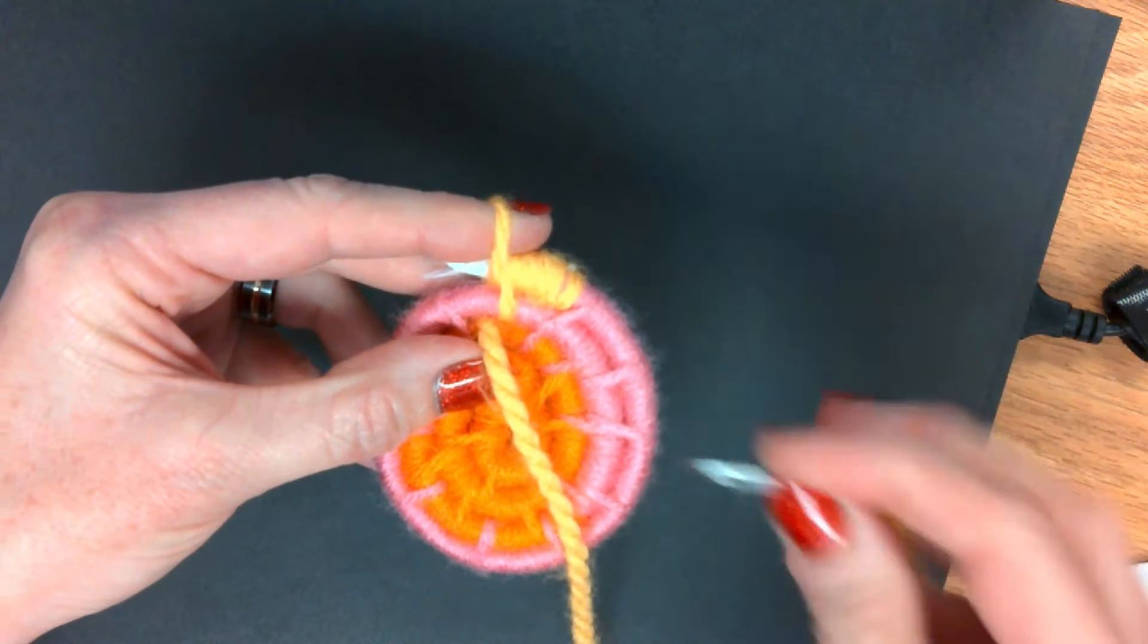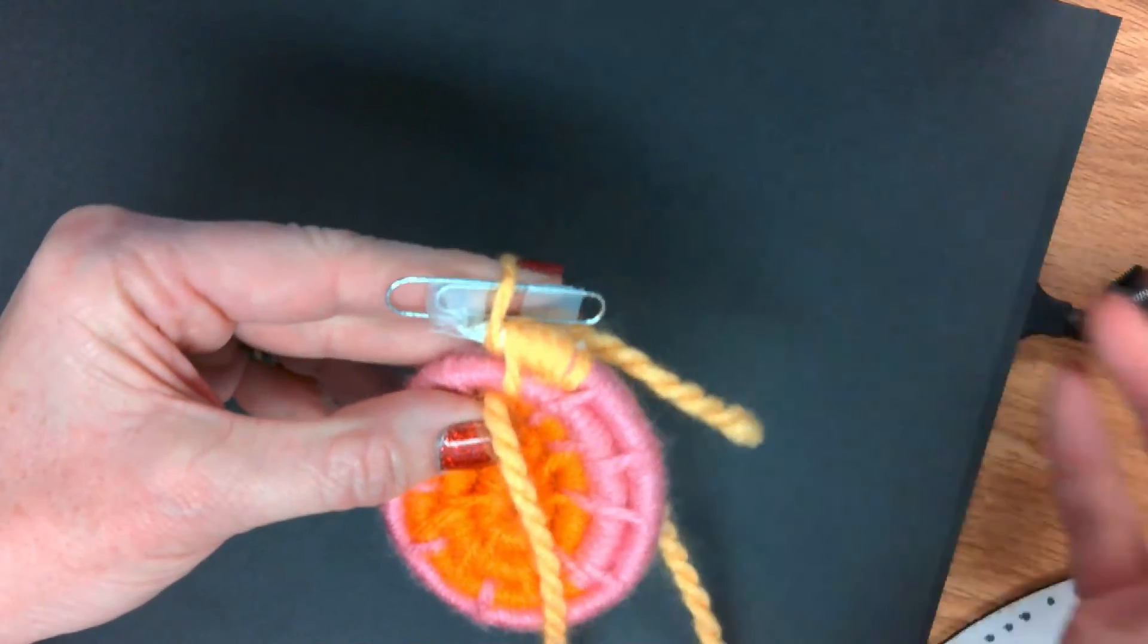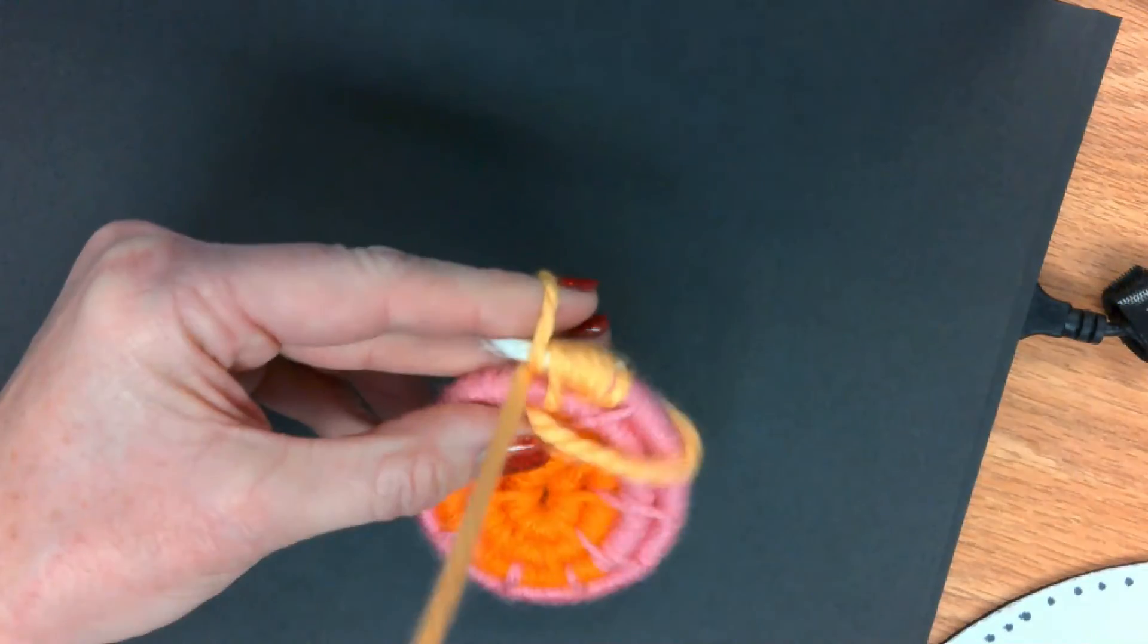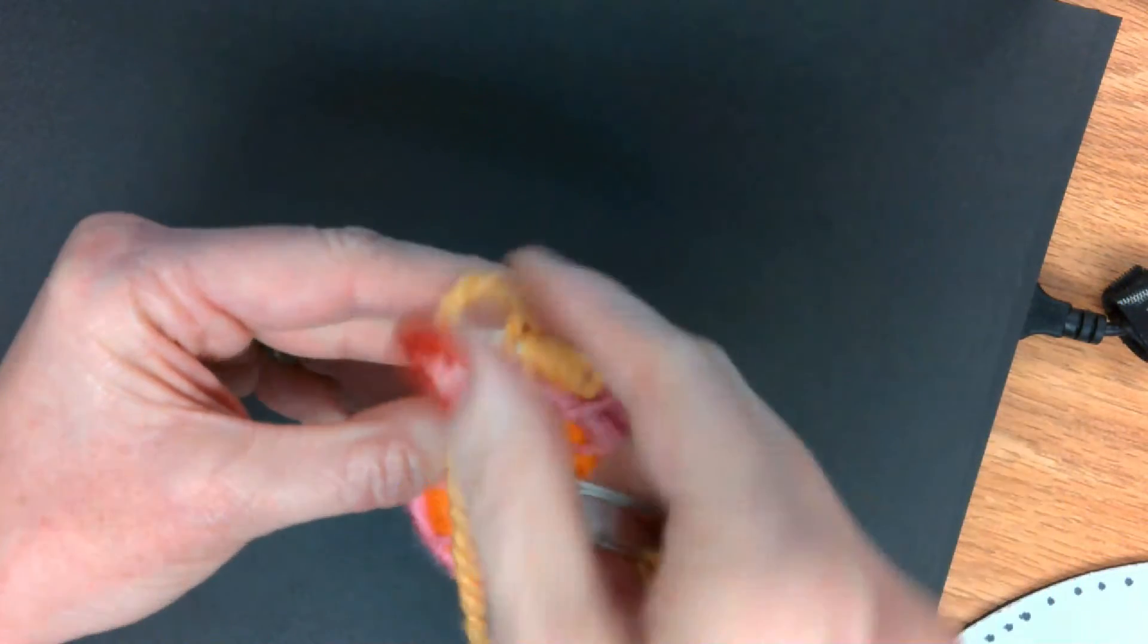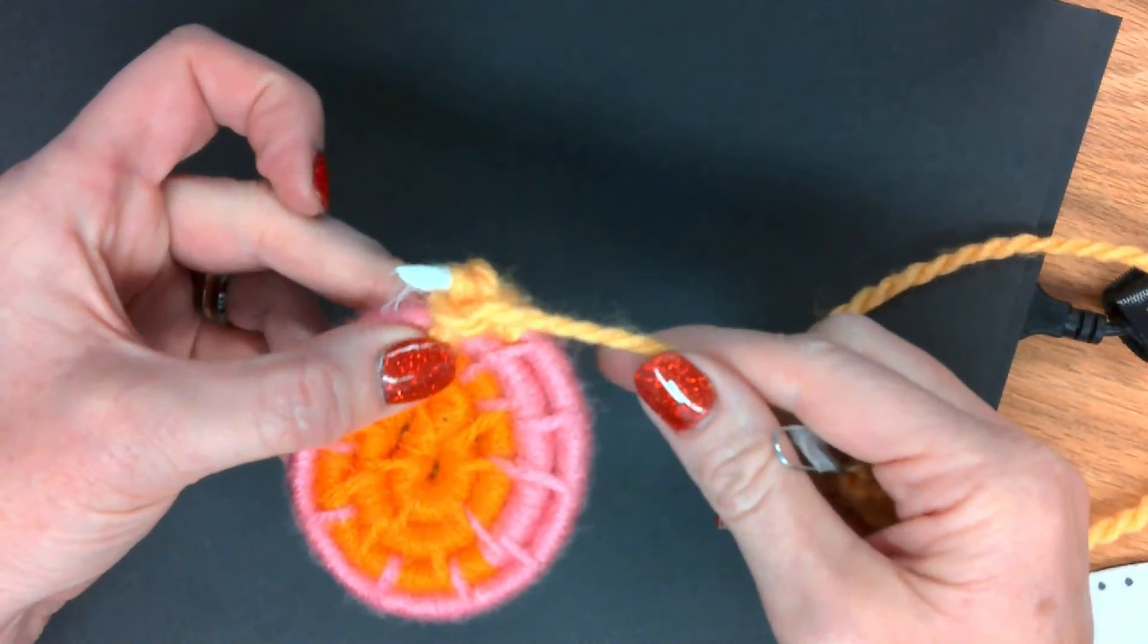Before you take your finger out, shove that clip under the string that's wrapping your finger, pull it through, make sure that your yarn is where it's supposed to be. Now you can pull your finger out and you can see that there's a knot starting.